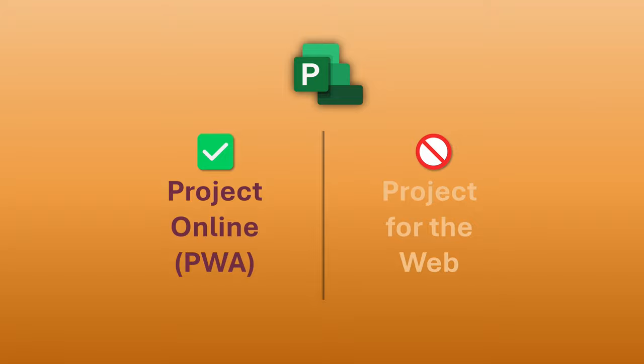Microsoft Project as of now is also in a confused state. There are two distinct products: one is Project Online, which is desktop plus the erstwhile Project Server, and then Project for the Web, which is a new incarnation of MS Project — a simplified Power App that uses Dataverse in the background. We are not going to discuss Project for the Web because it's underpowered and will likely be replaced with the new Project.